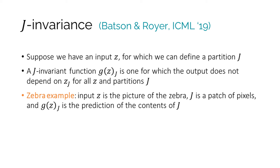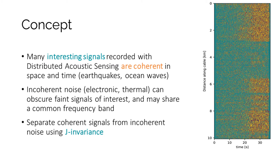Batson and Royer used this concept to develop an image denoiser with certain theoretical guarantees, but we can use the same principle for denoising DAS data. The reason we can do this is because many signals of interest are coherent in space and time — think of earthquakes, ocean waves, boats, etc. On the other hand, incoherent noise originating from electronic or thermal sources can obscure faint signals of interest and may overlap in frequency content. Therefore it is not always possible to separate interesting signals from noise with traditional filtering techniques. However, as we will show here, it is possible to separate them using the concept of J-invariants.